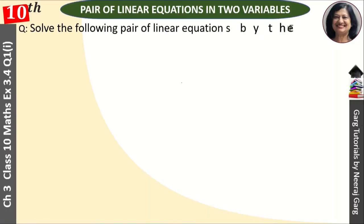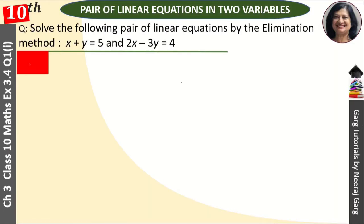Hi, this is Neeraj Garg and you are watching Class 10th Chapter 3, Pair of Linear Equations in Two Variables, Exercise 3.4, Question Number 1. Solve the following pair of linear equations by elimination method. The question gives us x plus y is equal to 5 and 2x minus 3y is equal to 4.